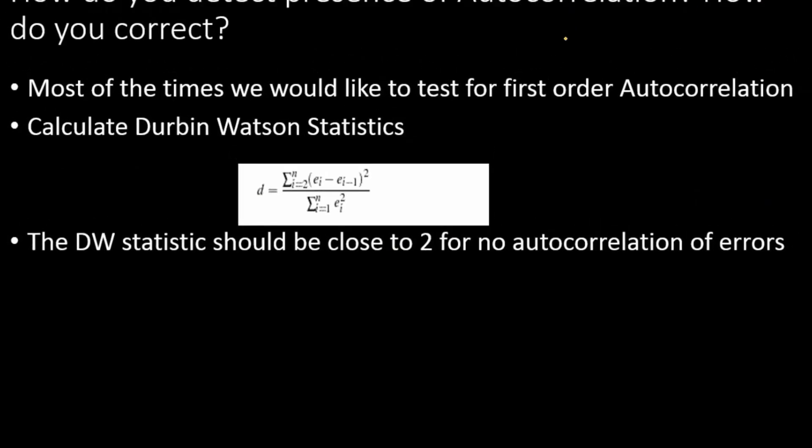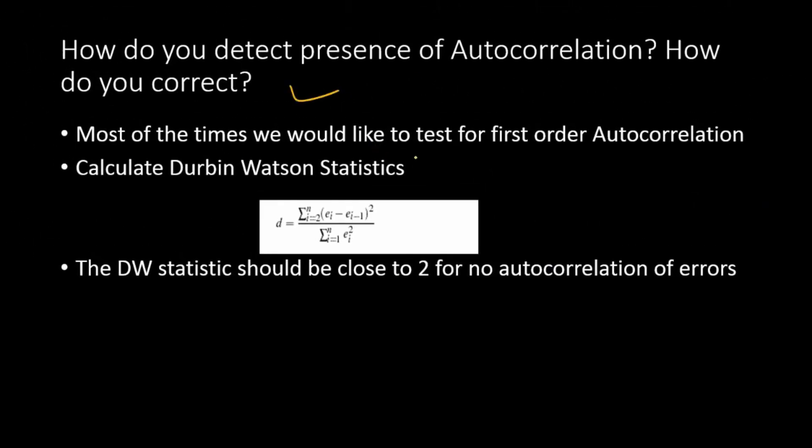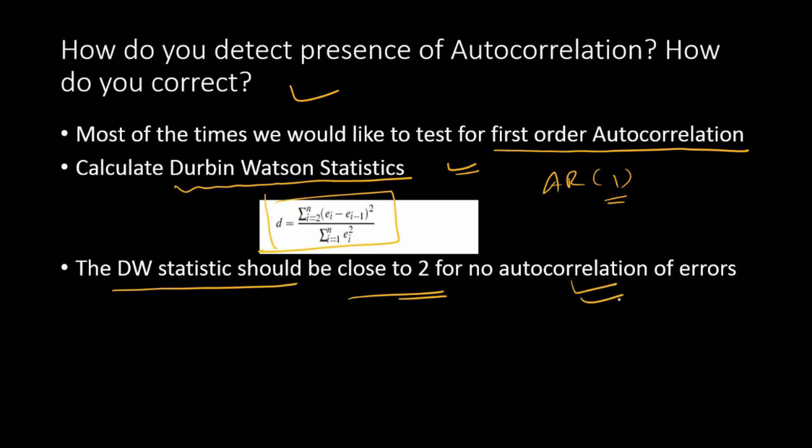How do you detect presence of autocorrelation and how do you correct? Most of the time we encounter autocorrelation of first order. First order correlation can be detected using the statistical test known as Durbin-Watson test. Here is the Durbin-Watson test formula: you have errors from two different series, ei and ei minus 1, so you're testing AR1 autocorrelation—first order. The rule of thumb is that if the DW statistic or Durbin-Watson statistic is close to 2, then there is no autocorrelation; otherwise there is autocorrelation.